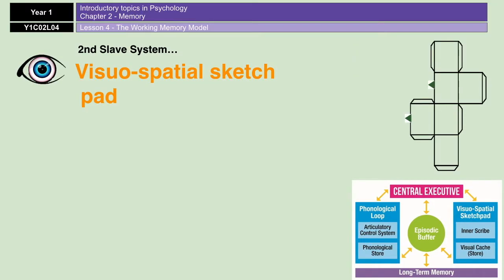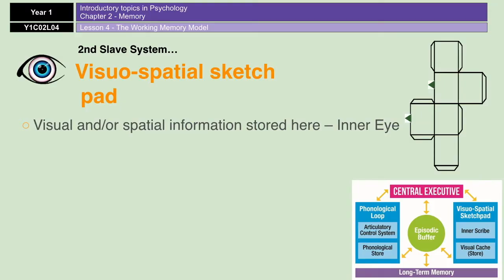The second slave system is the visuospatial sketchpad, which is all about spatial information — it's your inner eye, essentially. If you have a look at the top right of the slide, you can see a net of a cube. If I asked you to fold that up in your head and make it into a cube, you'd probably be able to do it fairly easily. But if I then also asked you to imagine the outside of your house and count up how many windows there are, you'd find it fairly difficult. That brings us back to the same thing as with the phonological loop — it has a very limited capacity.